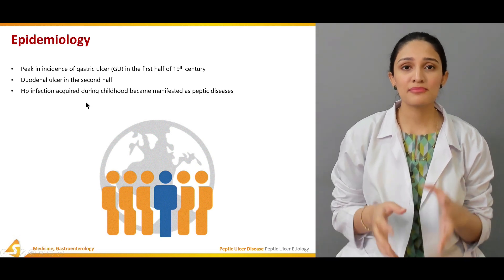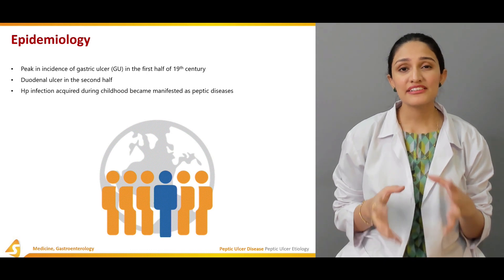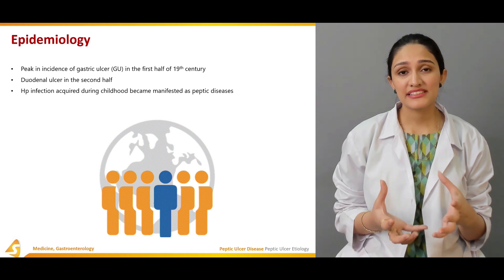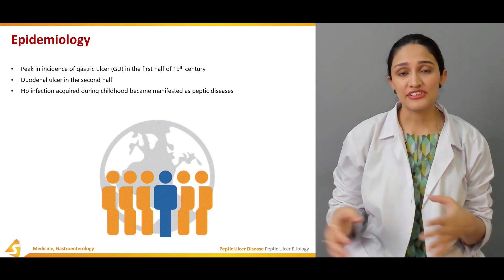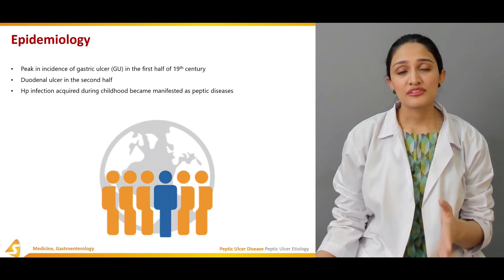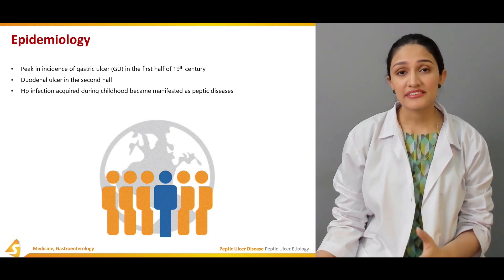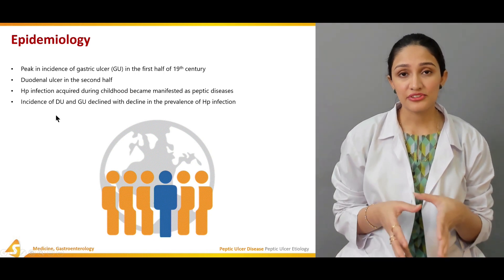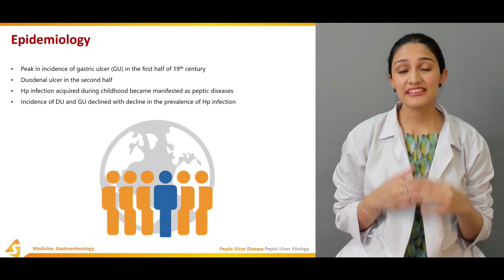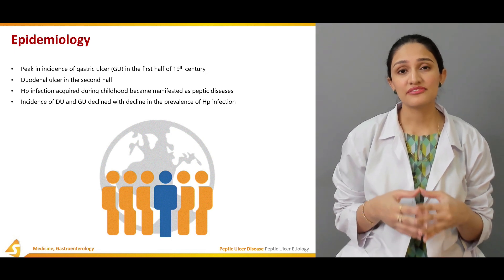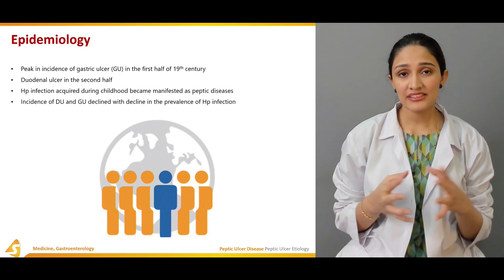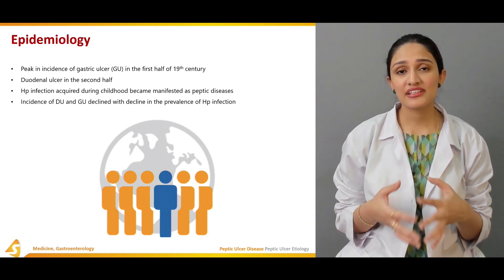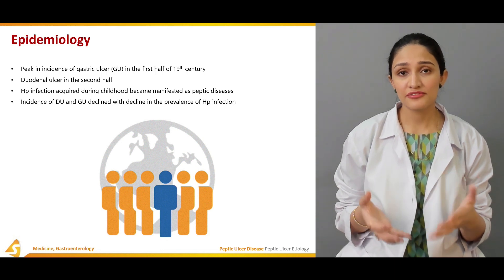Helicobacter pylori infection is usually acquired during childhood and it manifests as peptic disease in later ages when the child has grown up, probably in adult life. The incidence of duodenal ulcer and gastric ulcer usually declines with the decline of Helicobacter pylori infection, usually because of improved sanitary conditions and improved water and food supply.